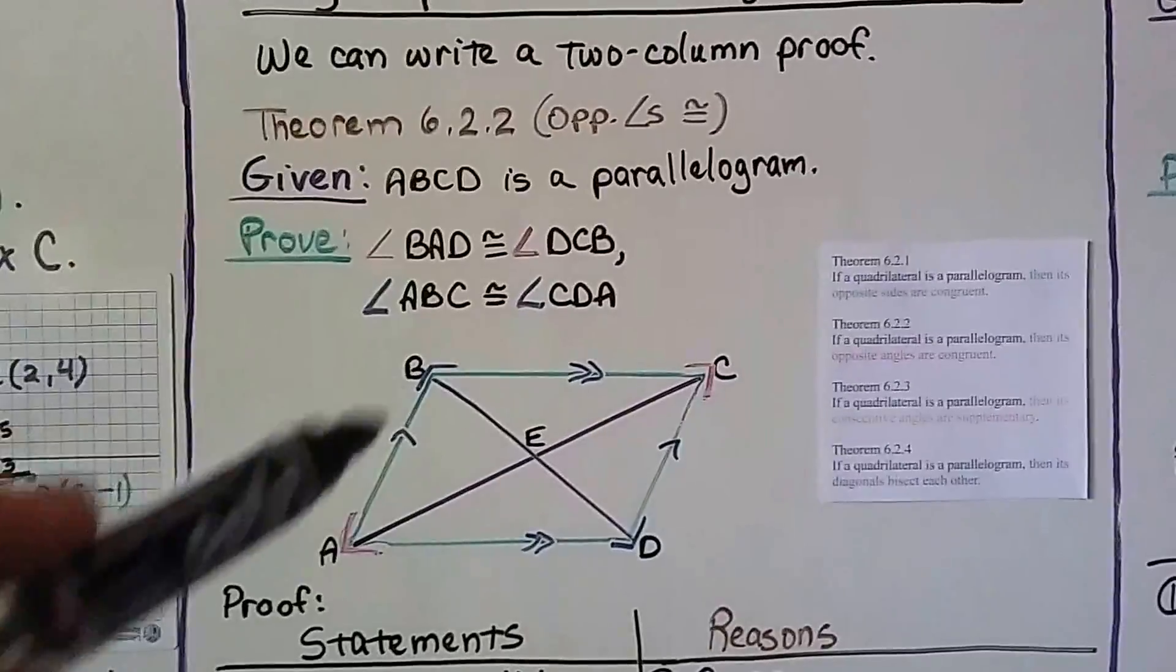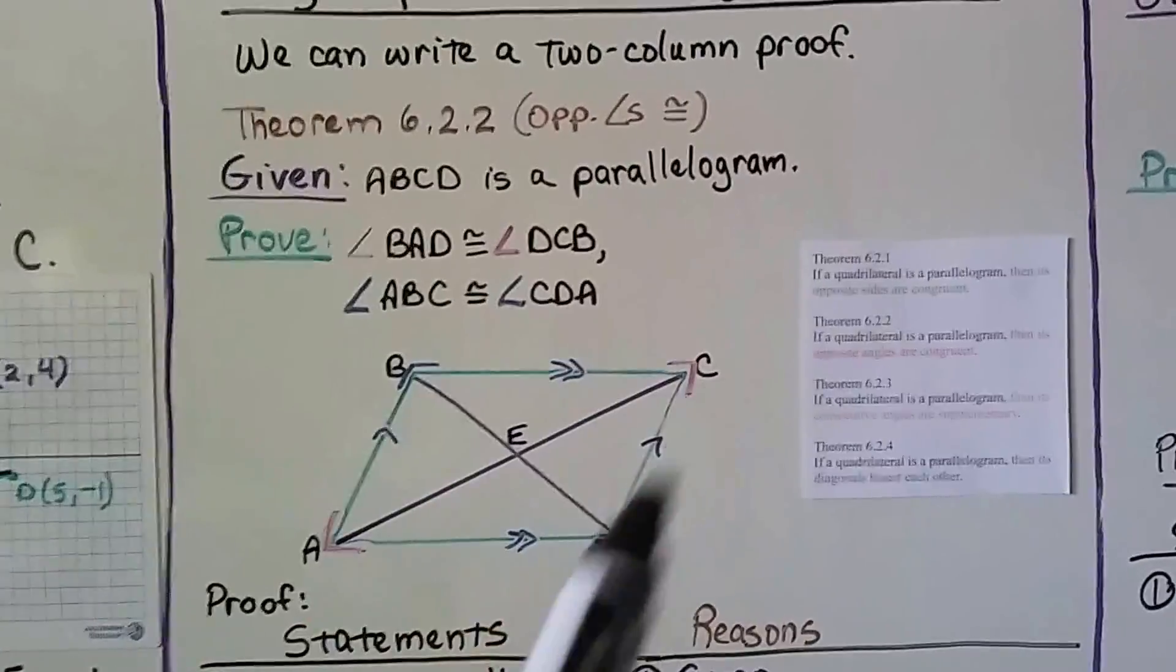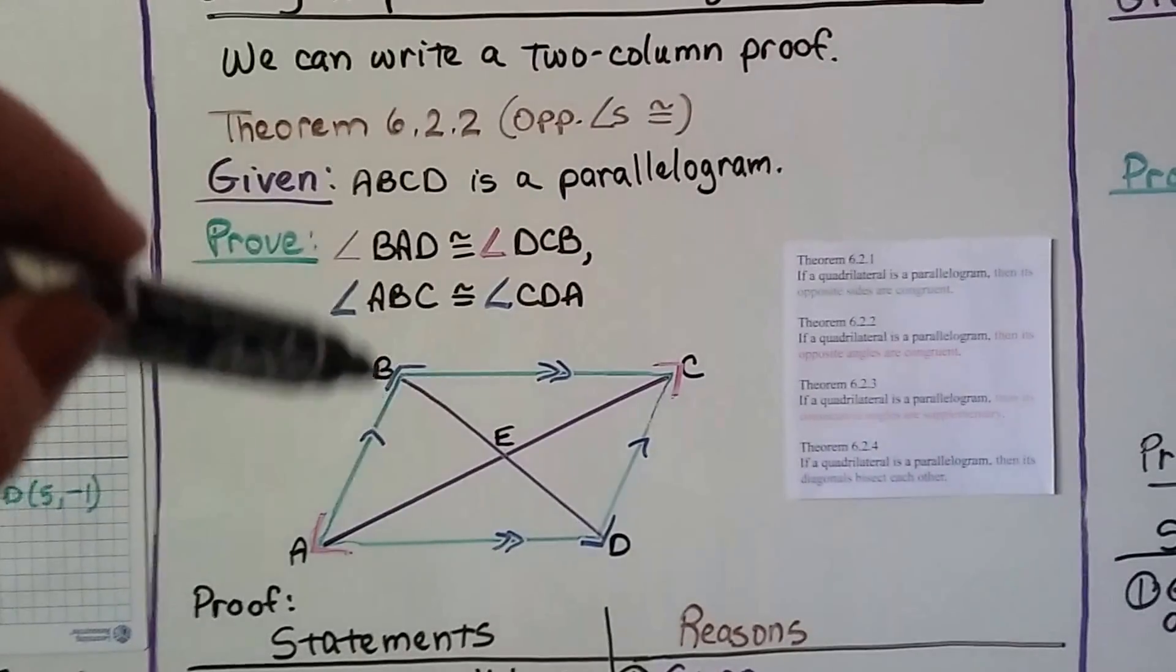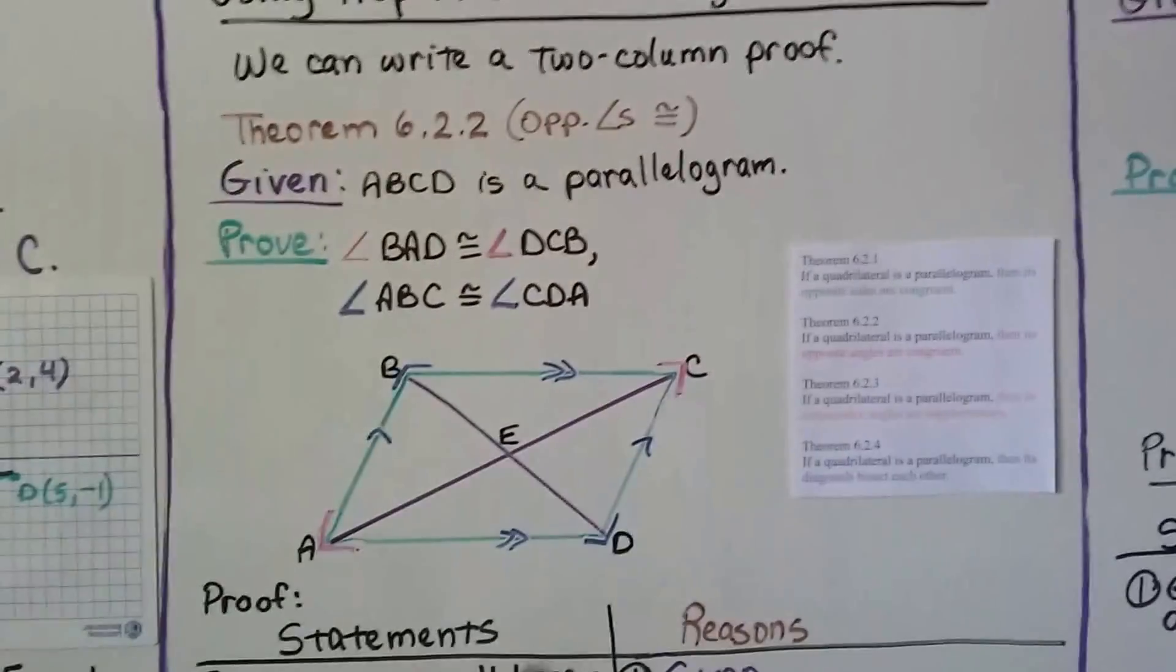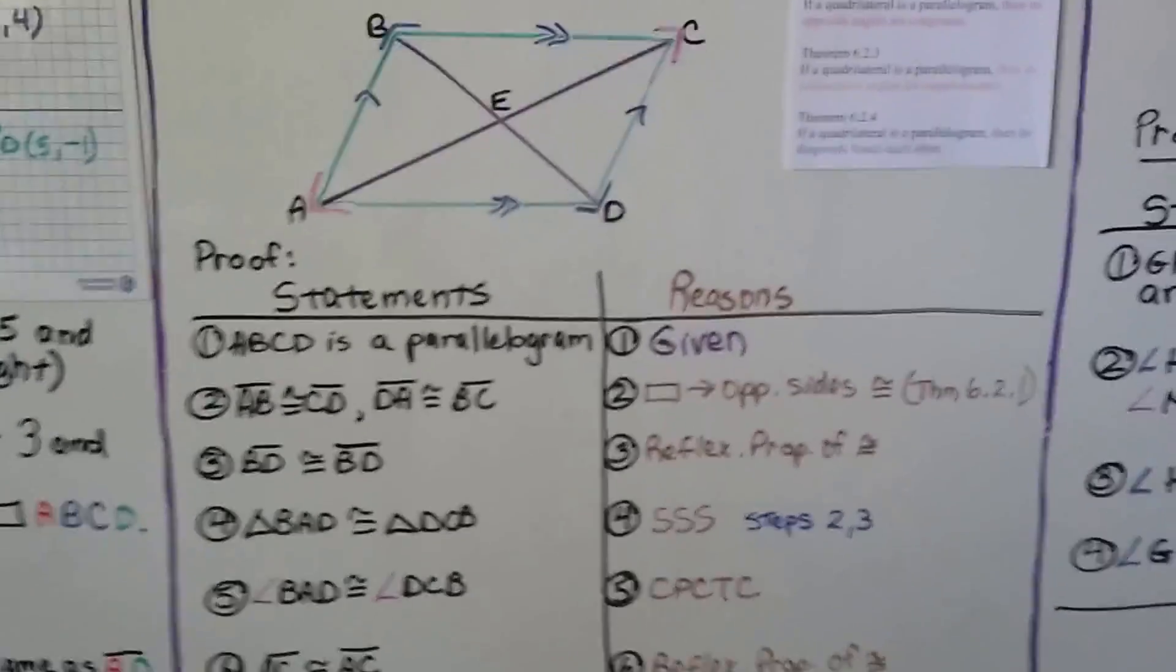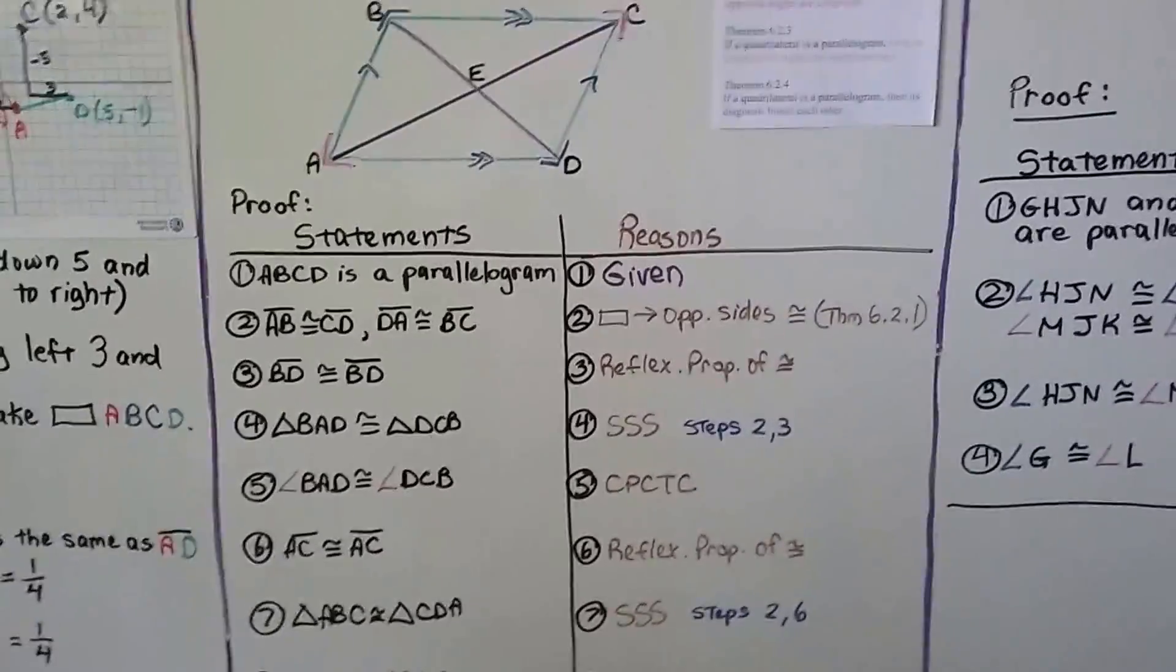So it's given that ABCD is a parallelogram. We need to prove that angle BAD, this one right here, is congruent to DCB, this one right here. We also need to prove that this angle ABC is congruent to this angle CDA. We have our two-column proof with statements and reasons.